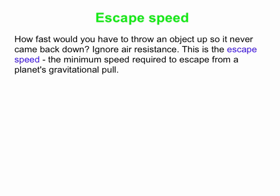Let's apply these ideas. We've got escape speed. What is that? Basically, we're going to ask the question, how fast do you have to throw an object up in the air so it never comes back down? We're going to do something crazy and ignore air resistance, which is clearly ridiculous, but we're going to do it anyway. This speed is known as the escape speed. The minimum speed, in fact, required to escape from a planet's gravitational pull. We're going to look for that minimum speed, the lowest speed we have to give an object at the Earth's surface when we throw it up so it never comes back down again.